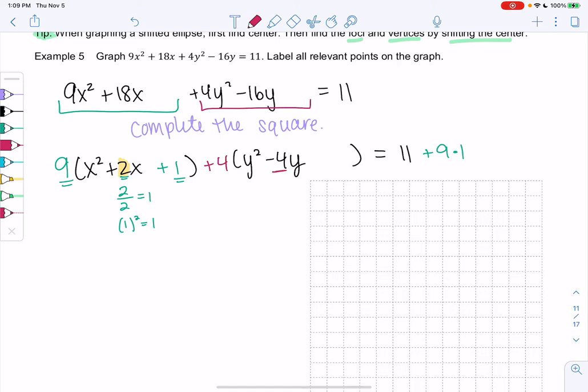For the y's, we're going to take the middle term, the negative 4, divide by 2, and we get negative 2. And when we square that, we get 4. So we'll add 4.